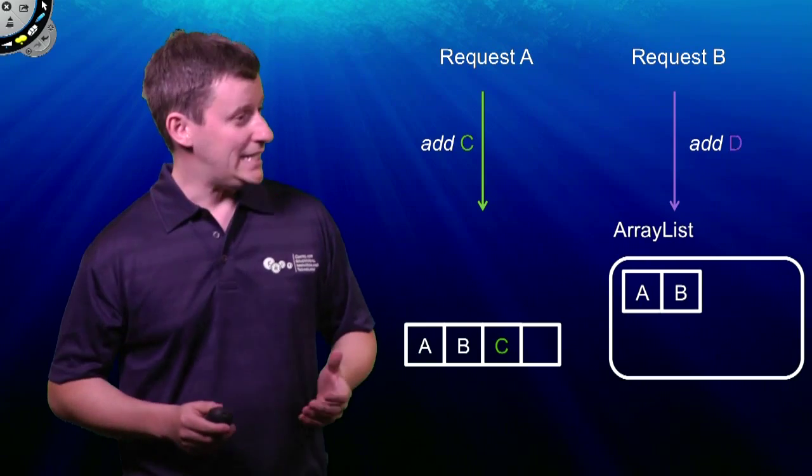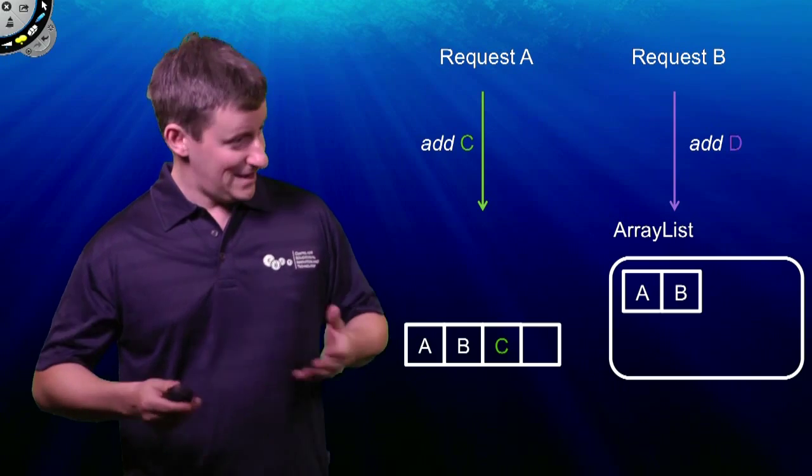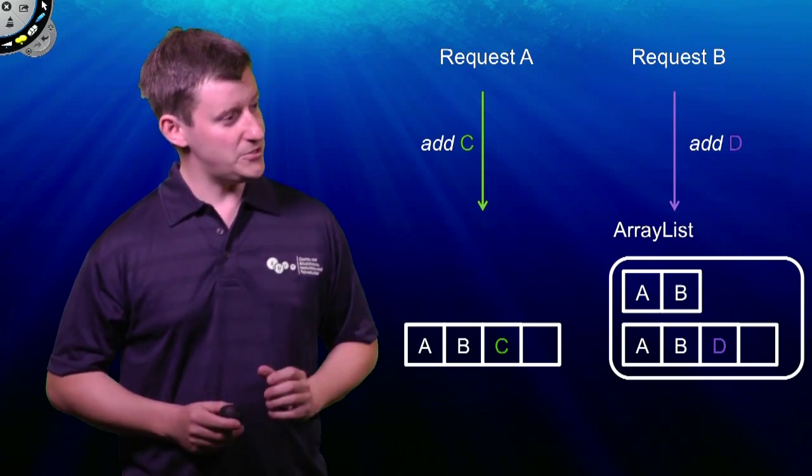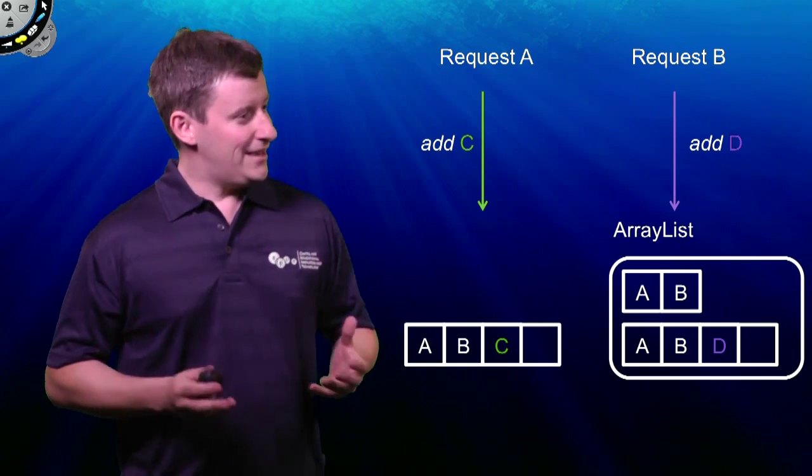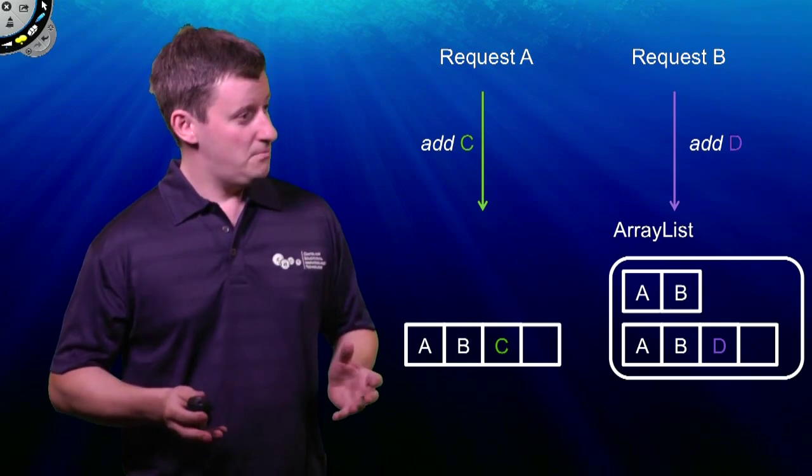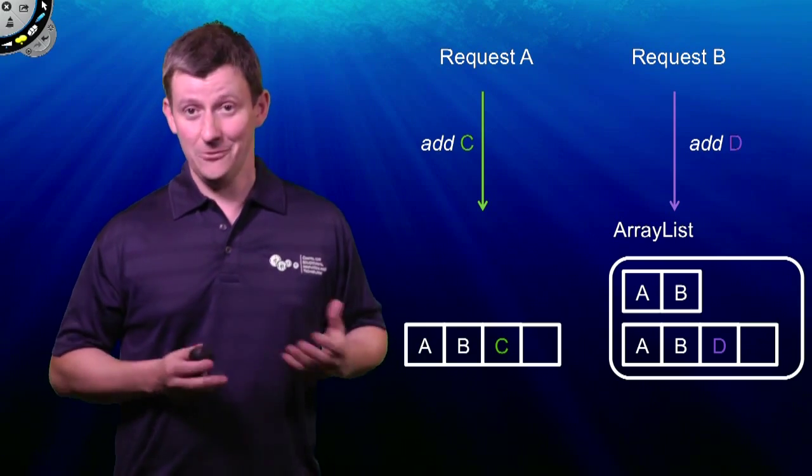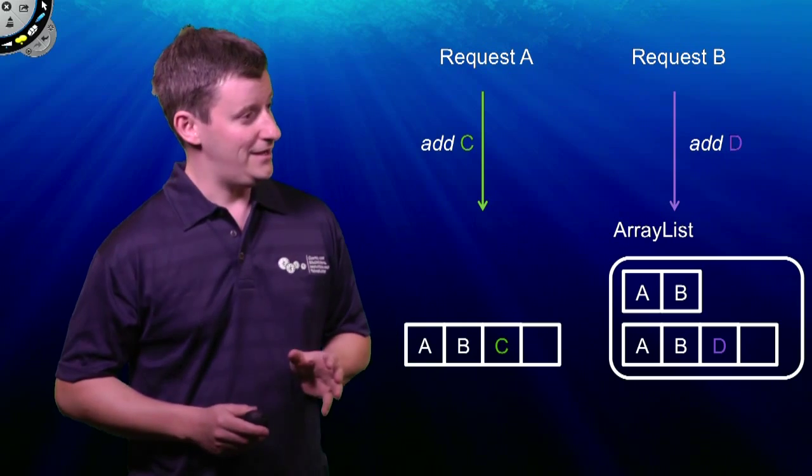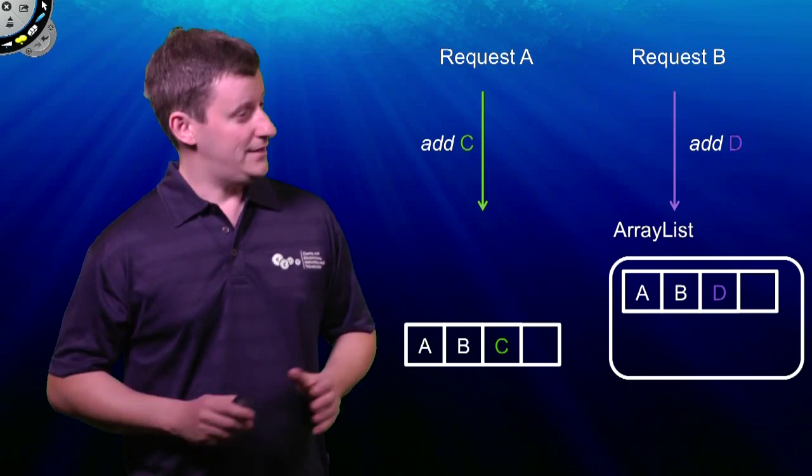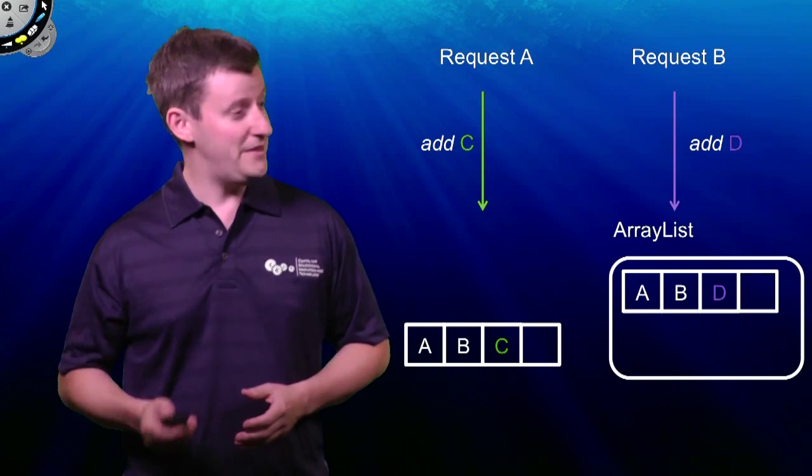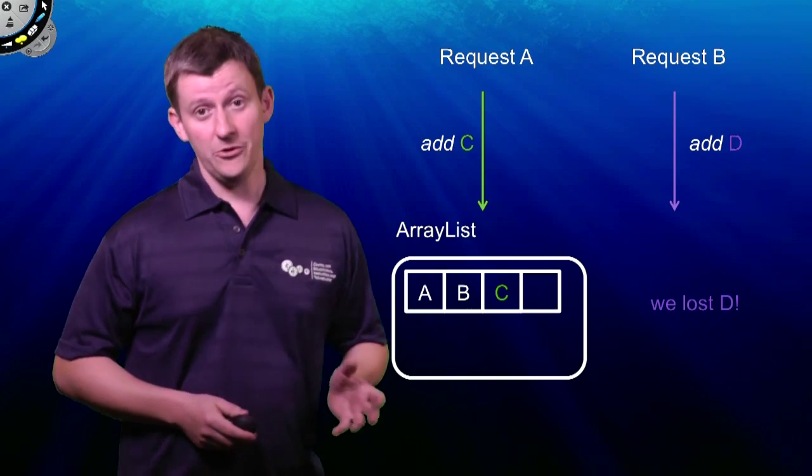And it calls the add method to add D. And the add method spots that the array is full. So it allocates one twice as big, it copies all the data across, it adds the new item into the array, and here now we've got two threads, both of which have arrays that they're just about to set as being the array for the ArrayList. And we don't know what order it's going to happen in, but one of these threads is going to set its array as the array for the ArrayList, and then the other one is going to overwrite it. And we're going to lose data from one of the requests.